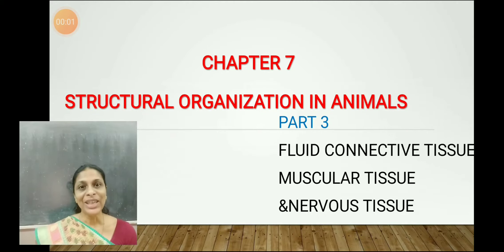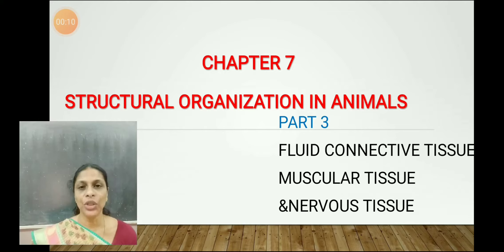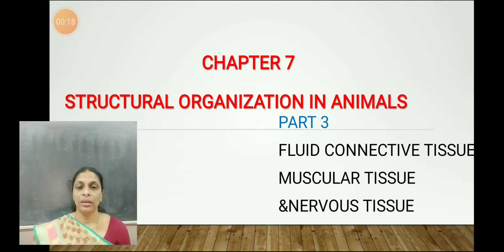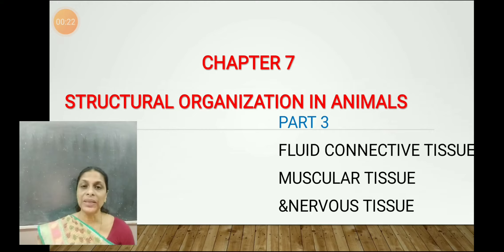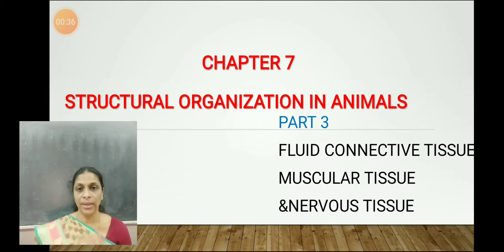Hello students, welcome to today's biology class. In the last class we discussed about connective tissues and we have seen that connective tissues can be broadly classified into three types: loose connective tissue, dense connective tissue, and skeletal tissue. In loose connective tissue we discussed about the areolar tissue and adipose tissue; in dense connective tissue we discussed about tendons and ligaments; and in skeletal tissue we discussed about bone and cartilage.